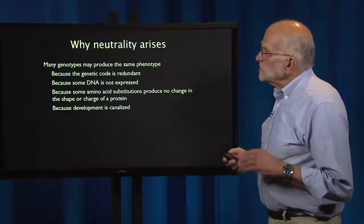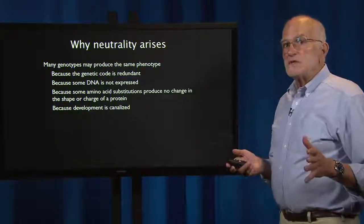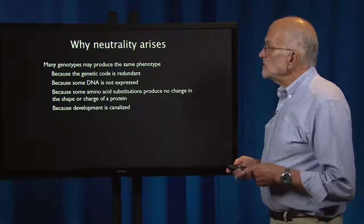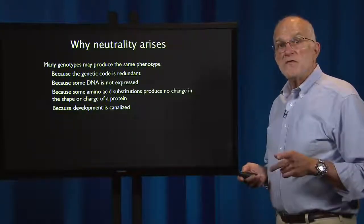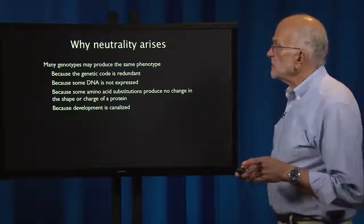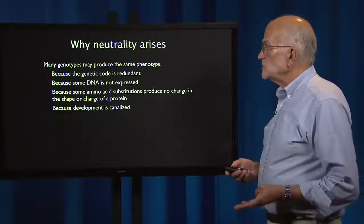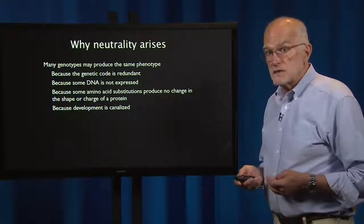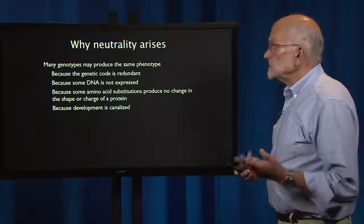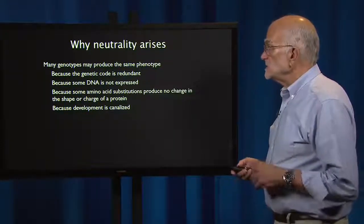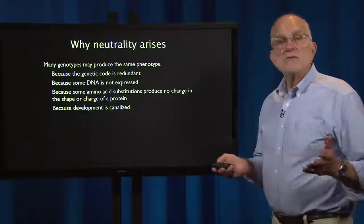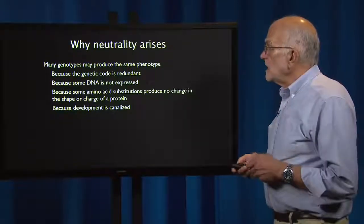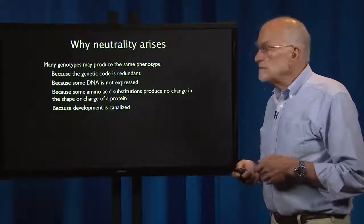There are two general reasons for neutrality. One is that many genotypes may produce the same phenotype. That's because the genetic code is redundant, because some DNA is not expressed, because some amino acid substitutions produce no difference in the shape or function of a protein, and because development is canalized.